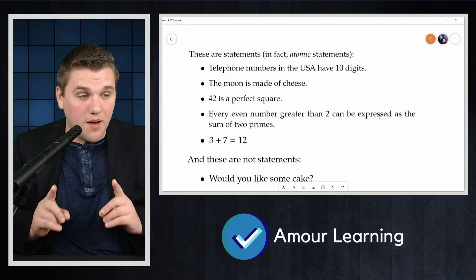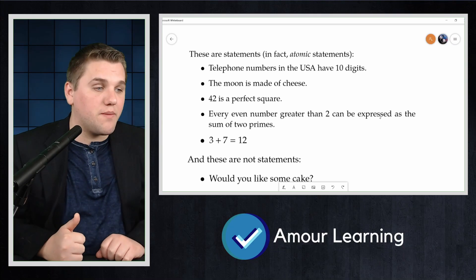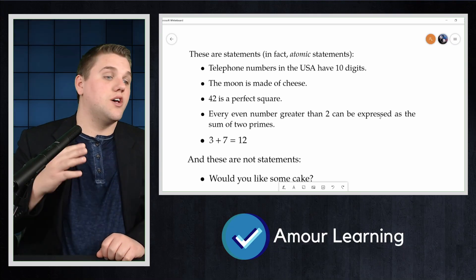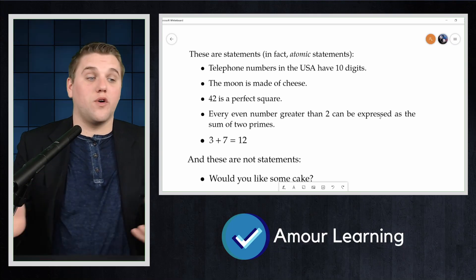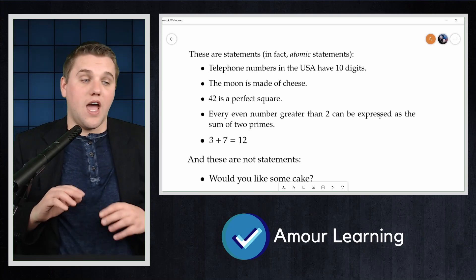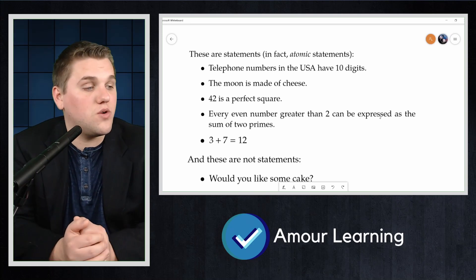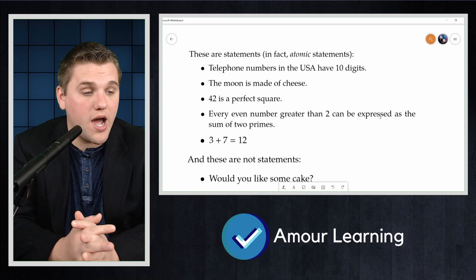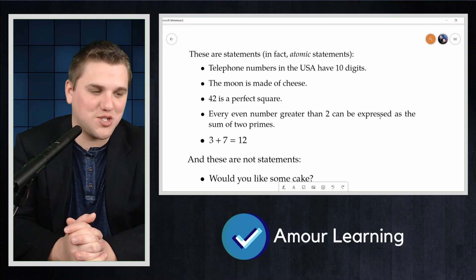Let's take a look at some examples. These are statements, in fact, atomic statements. Telephone numbers in the USA have 10 digits. The moon is made of cheese. 42 is a perfect square. Every even number greater than 2 can be expressed as the sum of 2 primes. 3 plus 7 equals 12.